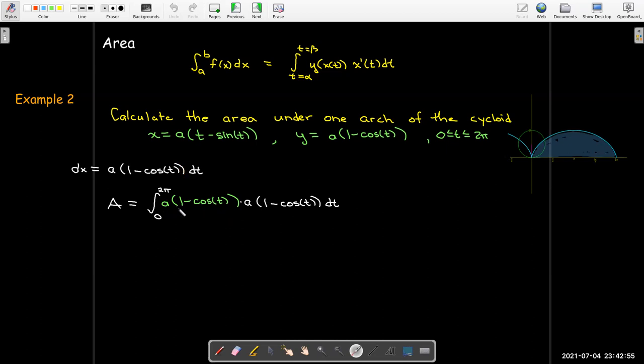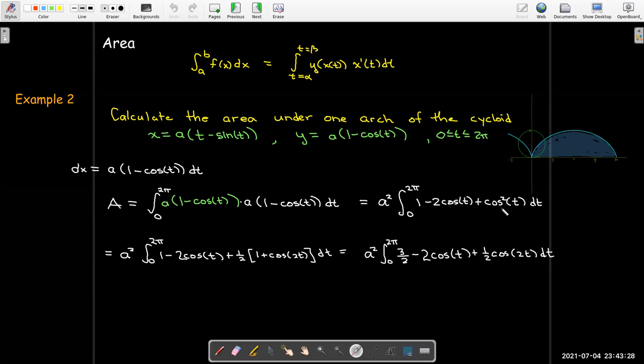So I've got two a's multiplied together. I'll bring that out in front as a squared. Inside, I'll have 1 minus cosine t quantity squared. So go ahead and use FOIL to multiply that out to get 1 minus 2 cosine of t plus cosine squared of t. Now I can use an identity for cosine squared of t. That's 1 half 1 plus cosine of 2t. Go ahead and remove the parentheses, collect like terms.